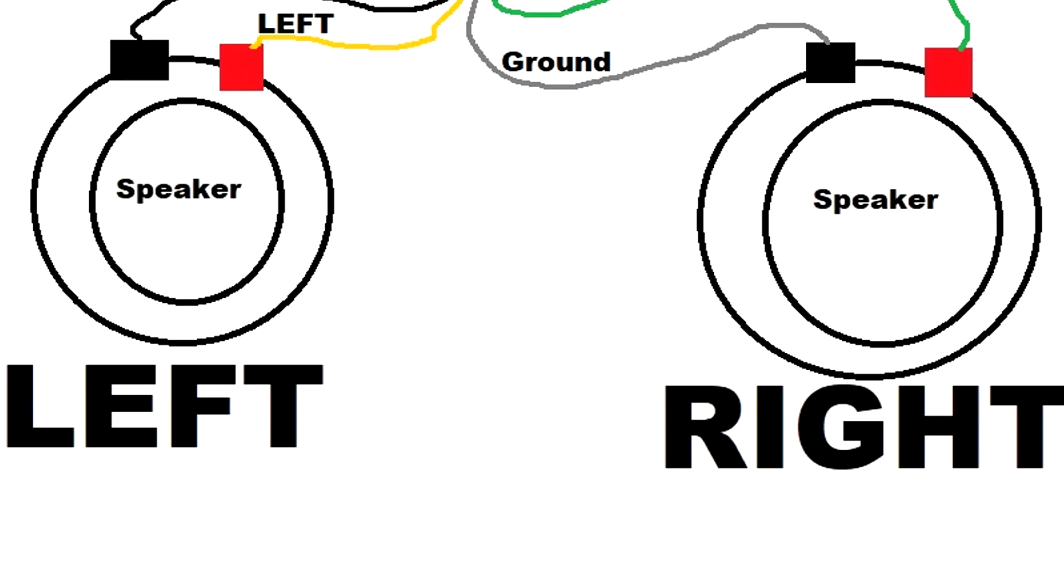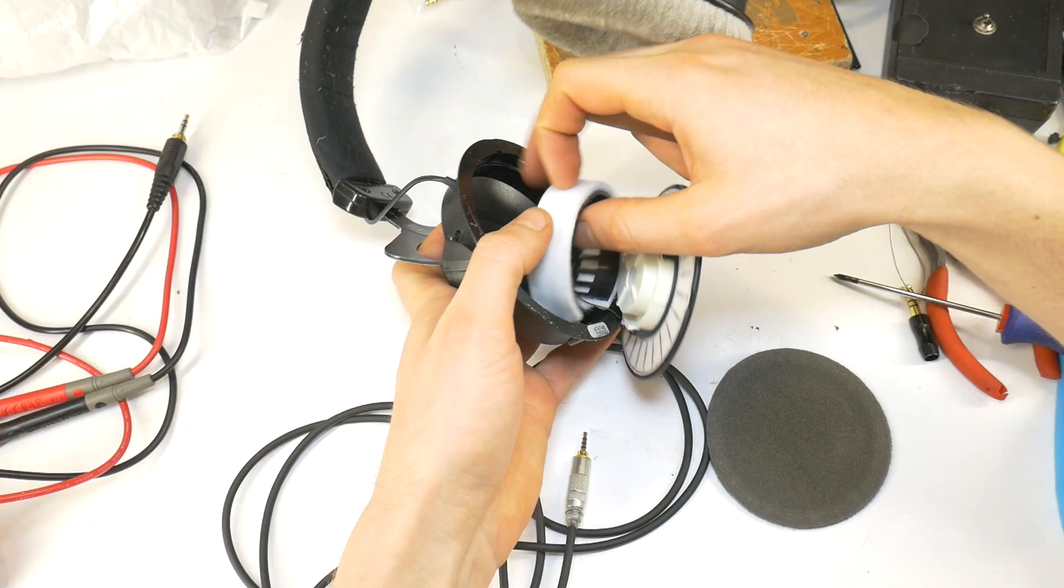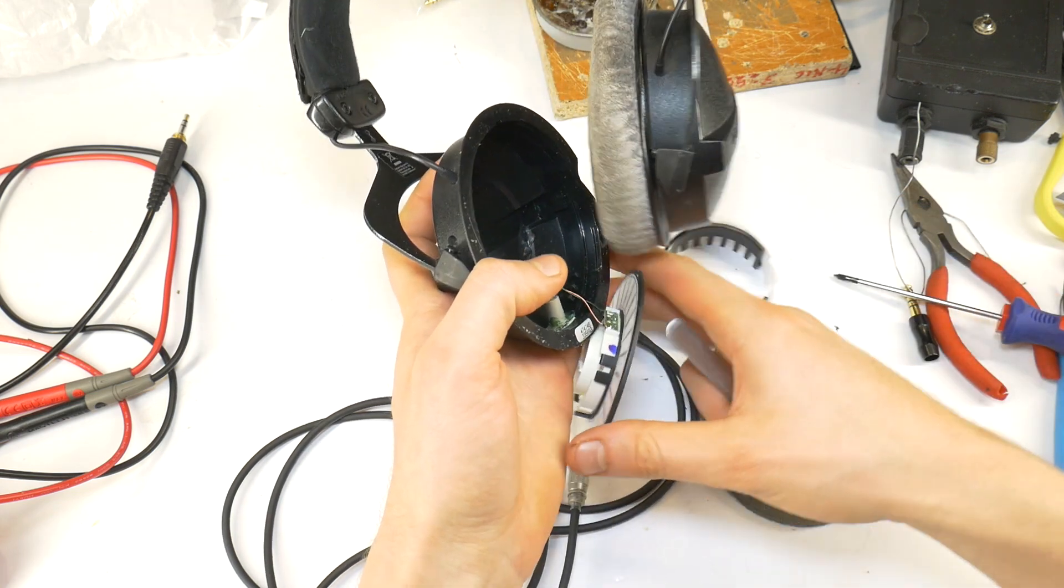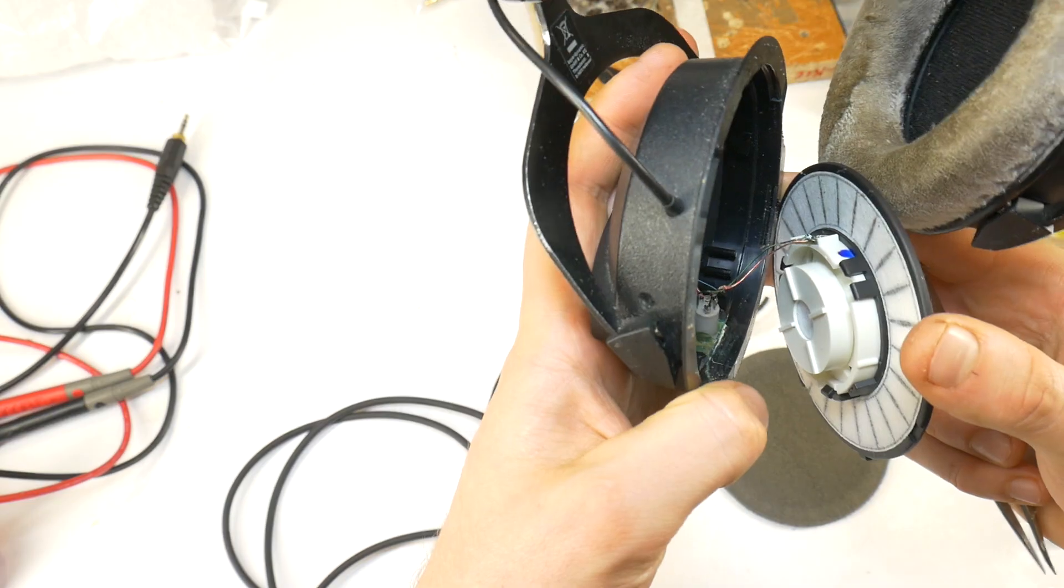As you can see from these pictures, any, absolutely any headphones, can be modded into balanced headphones, simply by making a small modification to the headphones to create separate ground wires. This was also done to these Beyerdynamic DT770 Pro when they had a detachable cable mod applied.